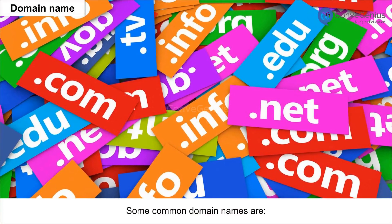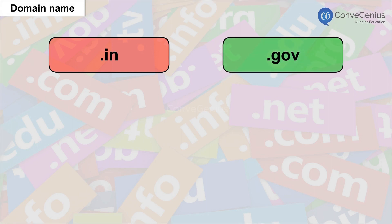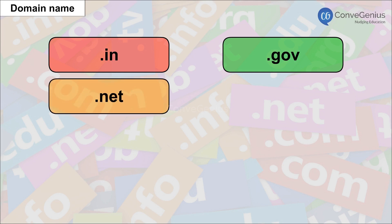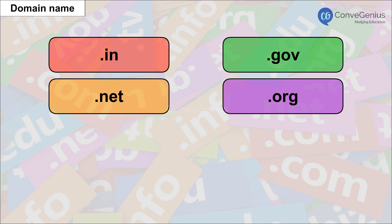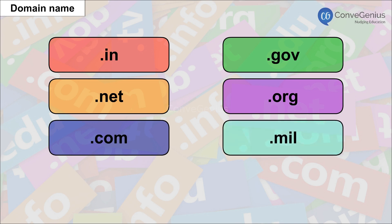Some common domain names are: .in, which stands for India; .gov, which can be used by government agencies; .net, which only network organizations can use; .org, which any non-profit organization can use; .com, which can be used by commercial organizations; and .mil, which can be used by military or defense agencies.